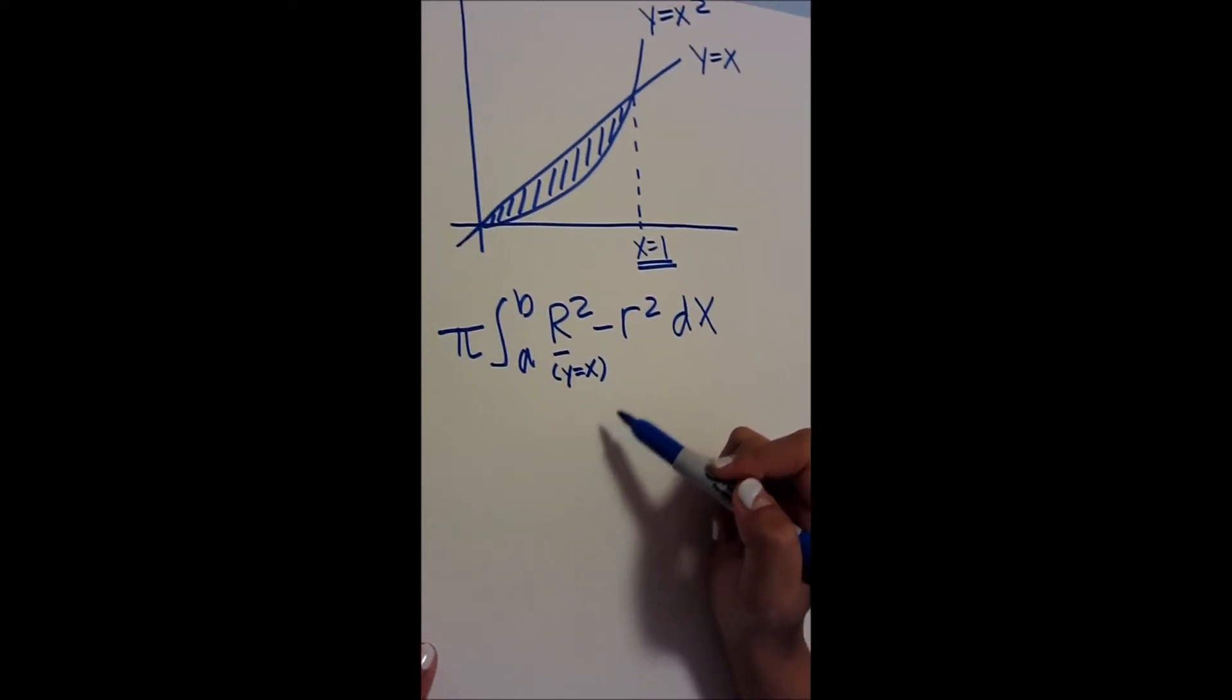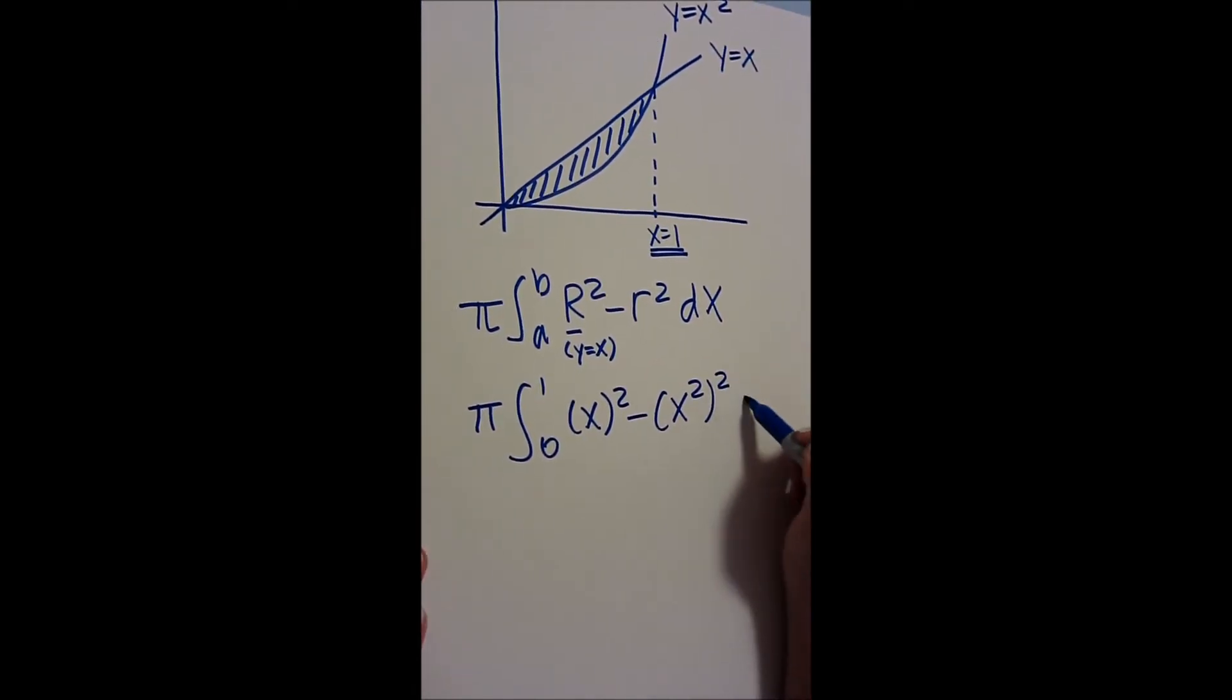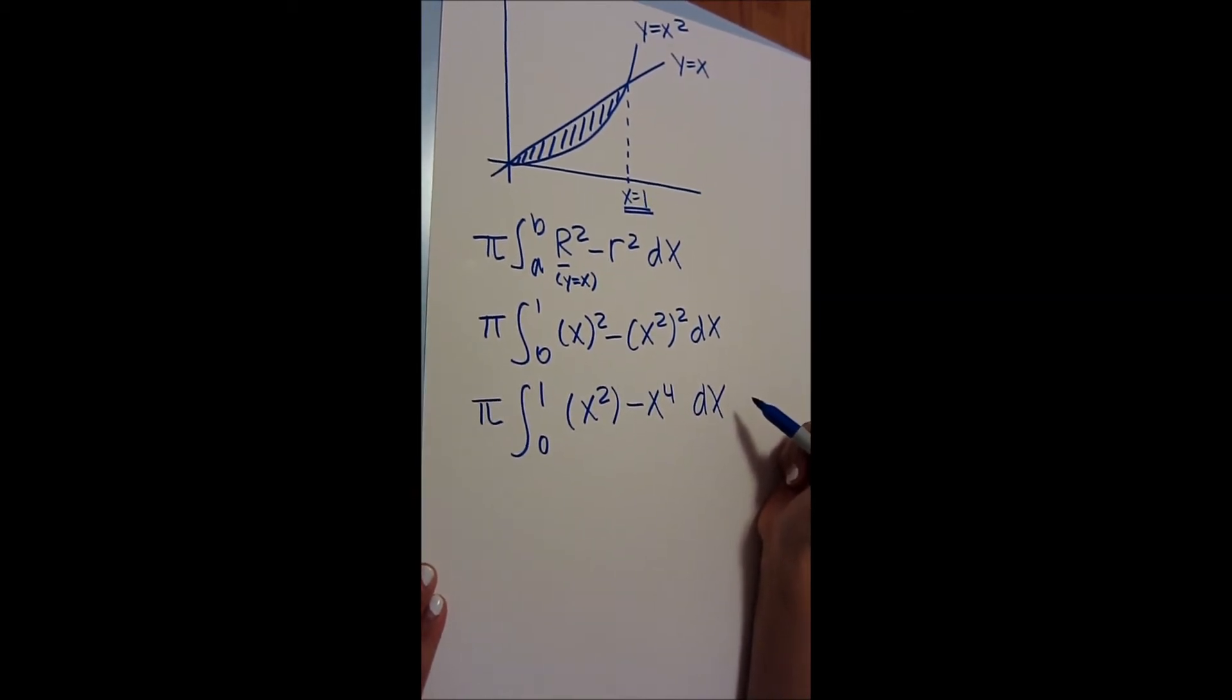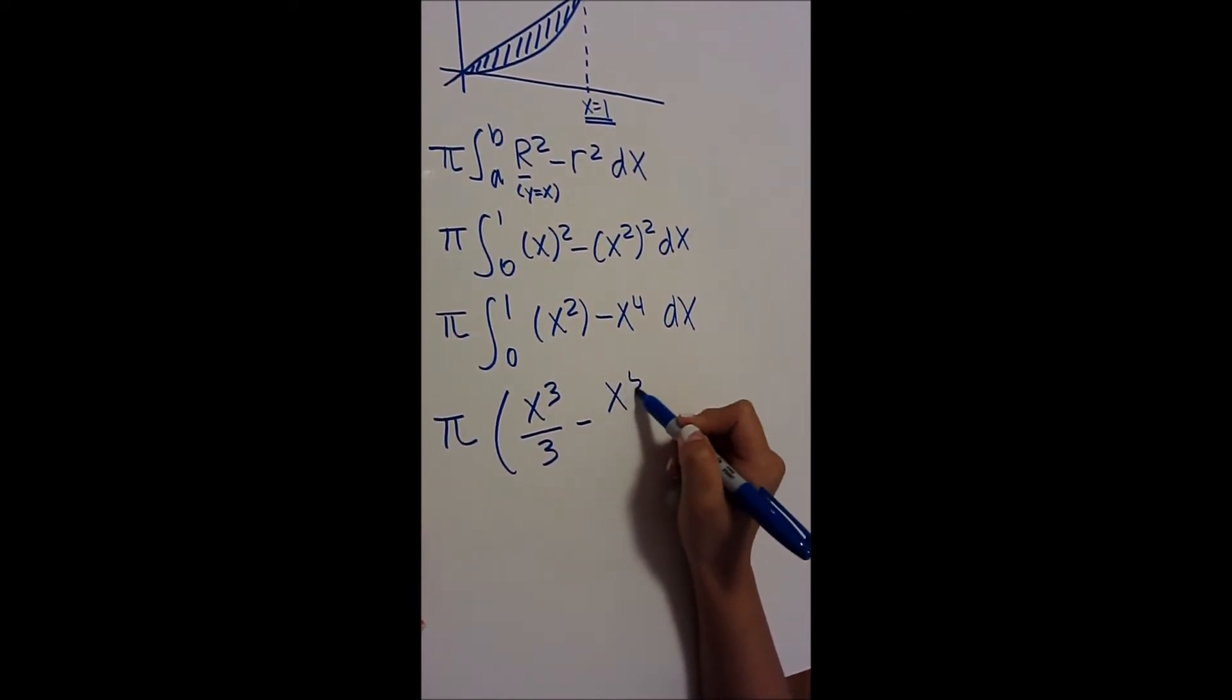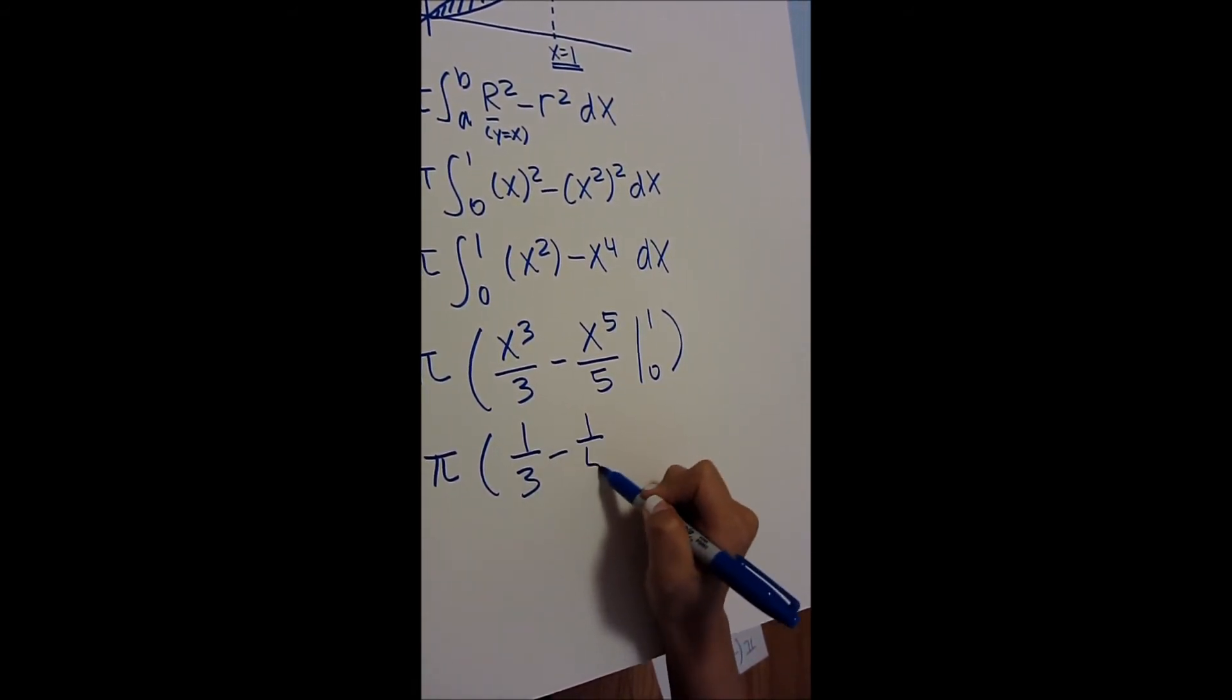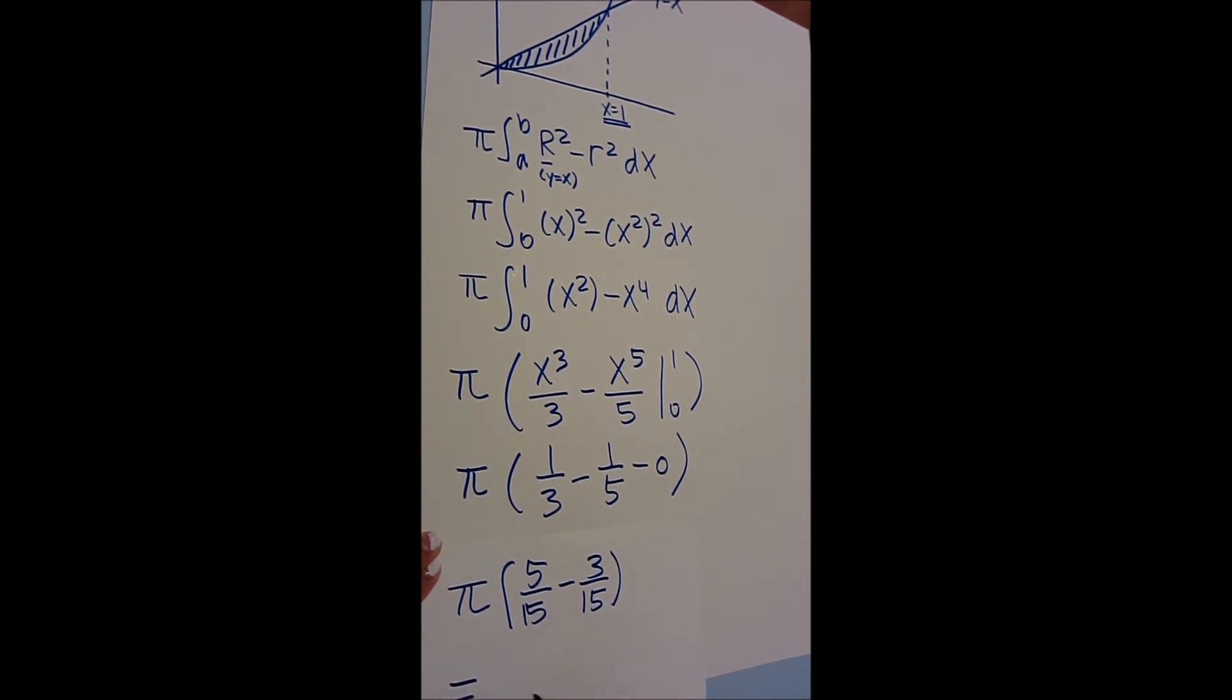So when you plug it into the formula, you get pi integral from 0 to 1, x squared minus x squared squared dx. Pi integral from 0 to 1, x squared minus x to the fourth dx. Now when you do this integral, you get pi times x to the third over 3 minus x to the fifth over 5, evaluated from 1 to 0. Then when you plug it in, you get pi times 1 third minus 1 fifth minus 0, and then you get pi times 5 over 15 minus 3 over 15, which equals 2 pi over 15.